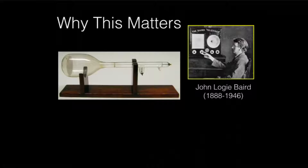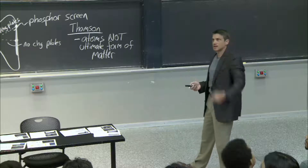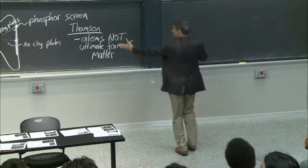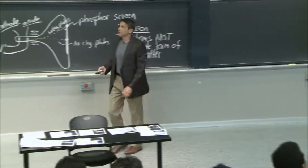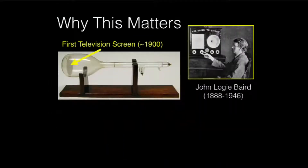But other people, like John Baird, said, wait a second — you just gave me a paintbrush. Look at this — that's a paintbrush, painting with a magnet. The screen would light up, and so he said, well, I can paint pictures. And this really is the first television screen.